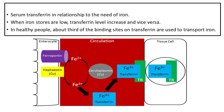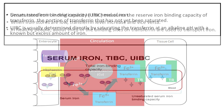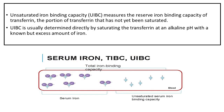In healthy people, about one-third of the binding sites on transferrin are used to transport iron. Unsaturated iron binding capacity (UIBC) measures the reserve iron binding capacity of transferrin — the portion of transferrin that has not yet been saturated.